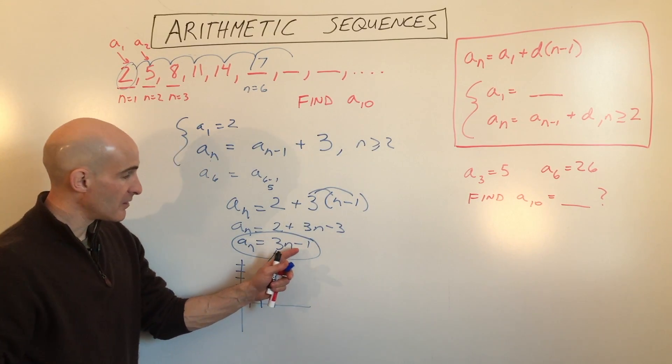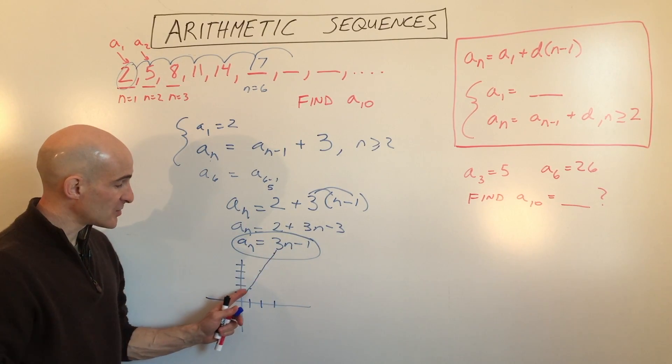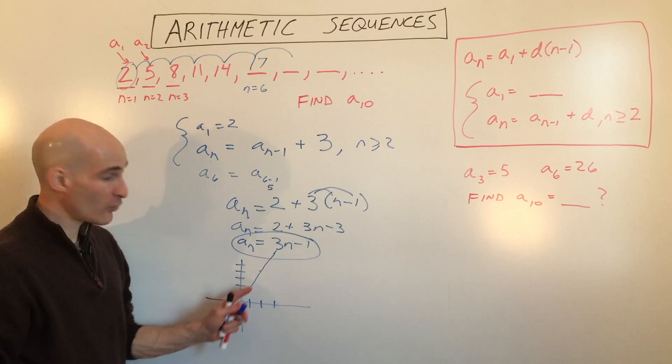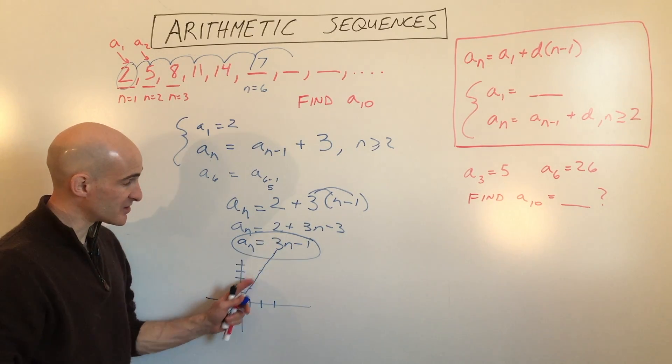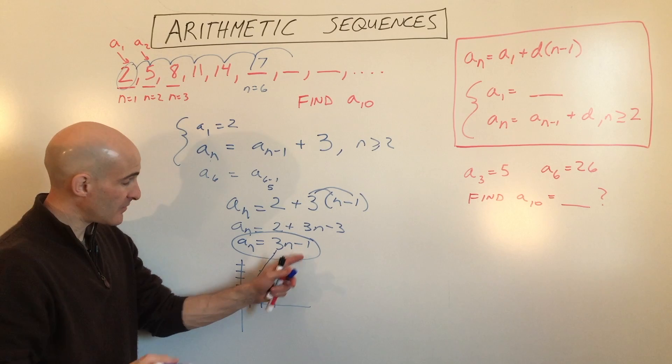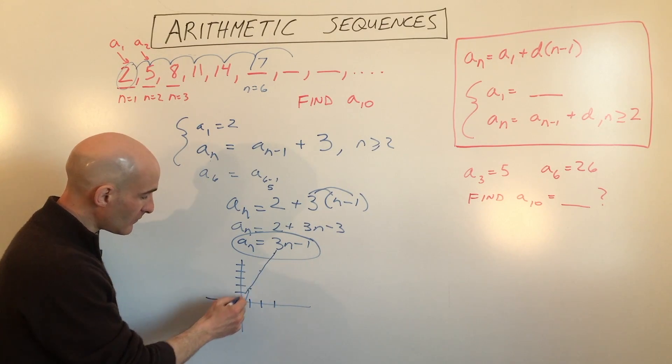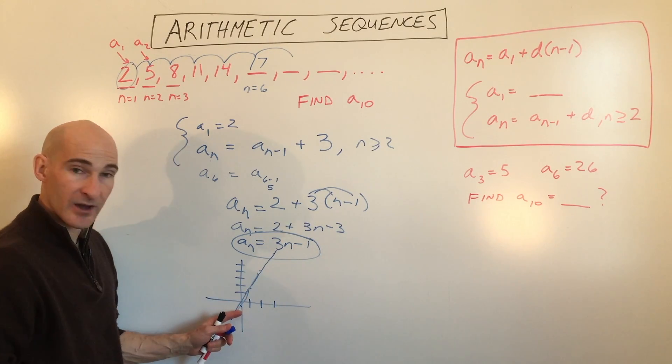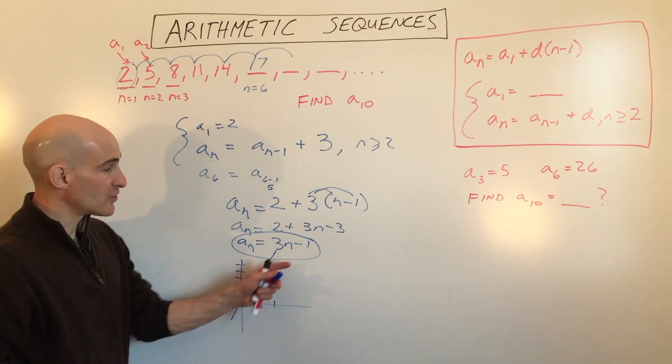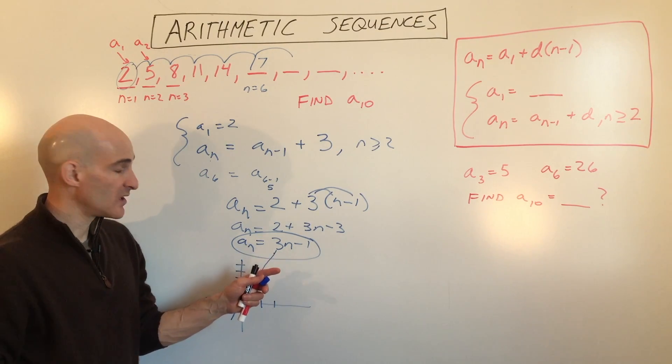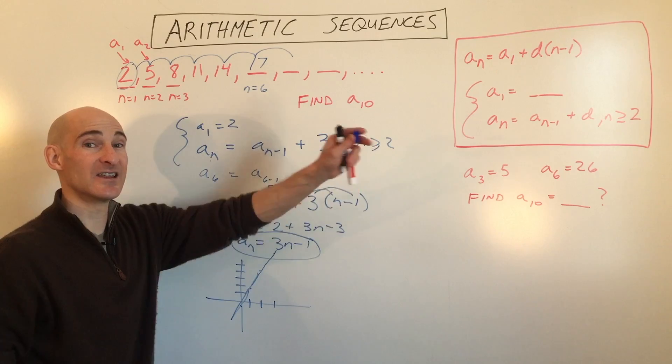And when you look at this equation here, you can tell by looking at it, 3 is really like our slope. We're going up 3 over 1, up 3 over 1. That's the common difference, is really the slope. And then the y-intercept, negative 1, is where it's crossing the y-axis here. So you can see the parallels between arithmetic sequences and linear equations.